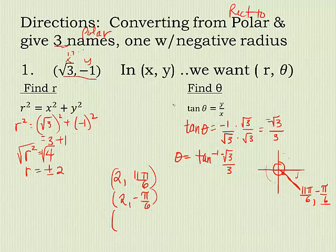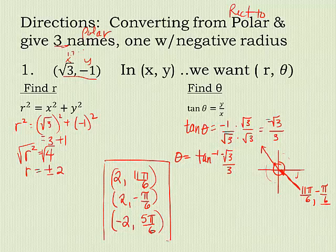And then lastly, I have to get one with a negative radius. So to change it to negative 2. Remember when you do that, you have to go the opposite direction. So if you need to, go back and look at your unit circle. And what angle is 180 degrees away from there? Well, it would be the π over 6 angle down here in quadrant 2, which is 5π over 6. So now I have my three names for the same point in polar form.